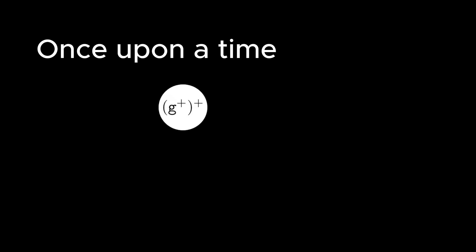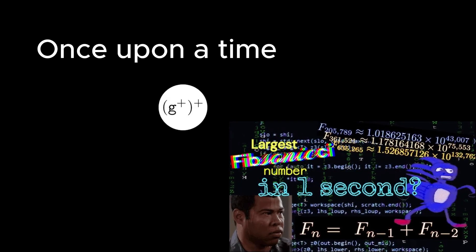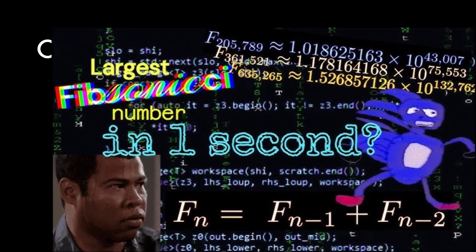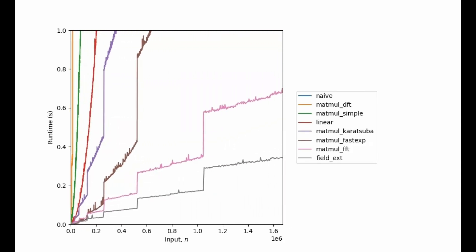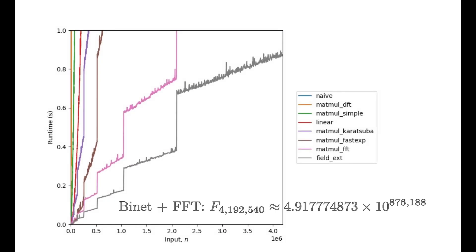Once upon a time, a mathematician posted a video about computing the largest Fibonacci number in one second. He used some big brain matrix math in C++ to reach the 4 millionth Fibonacci number in one second. But I think we can do better, like a lot better.